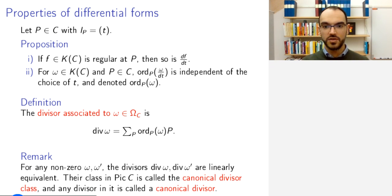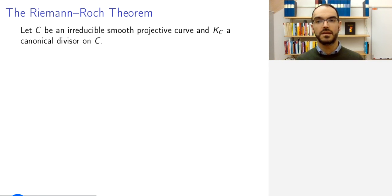So, they define a unique class that we will, therefore, call the canonical divisor class. And any divisor in this class will be called a canonical divisor. And now, we finally have all the tools we need to state the Riemann-Roch theorem.